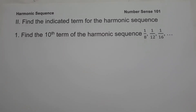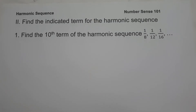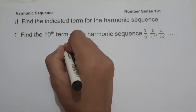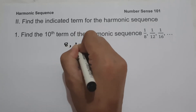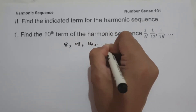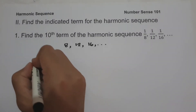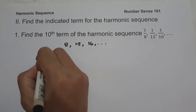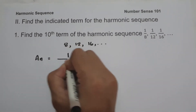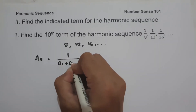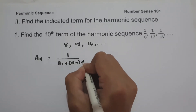On the second set of examples, we are going to find the indicated term for the harmonic sequence. On number 1, find the 10th term of the harmonic sequence 1/8, 1/12, 1/16. The reciprocals are 8, 12, 16. We use the formula a sub n equals 1 over (a sub 1 plus quantity n minus 1 times d).